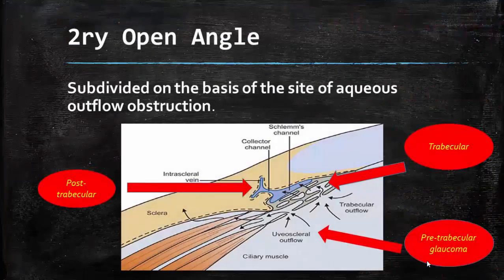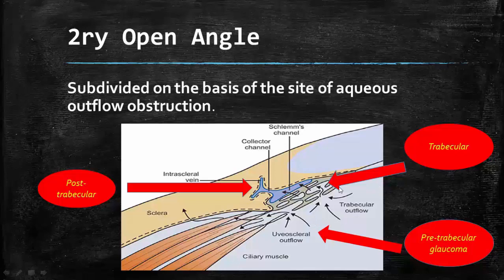Secondary open angle glaucoma is subdivided on the basis of the site of aqueous outflow obstruction into three categories: pre-trabecular glaucoma, in which the obstruction is before the trabecular meshwork; trabecular glaucoma, in which the obstruction occurs in the pores of the trabecular meshwork; and lastly, post-trabecular glaucoma, in which the obstruction is after the trabecular meshwork, mainly involving the venous drainage of aqueous.